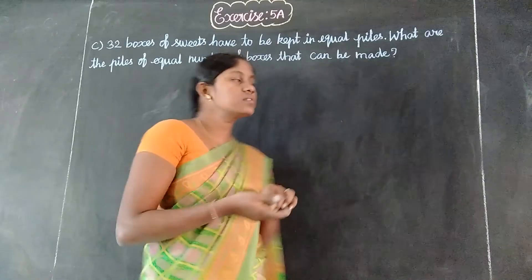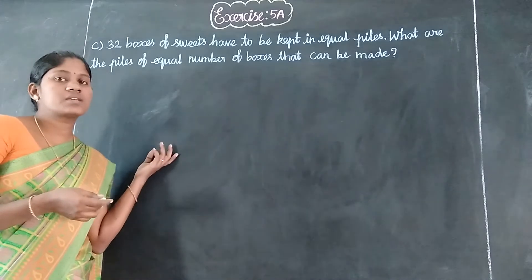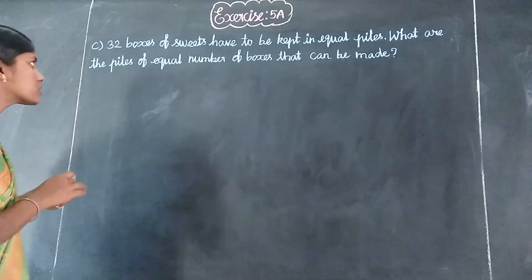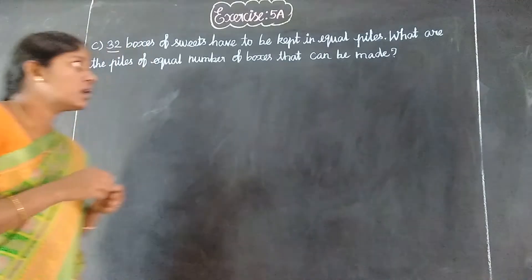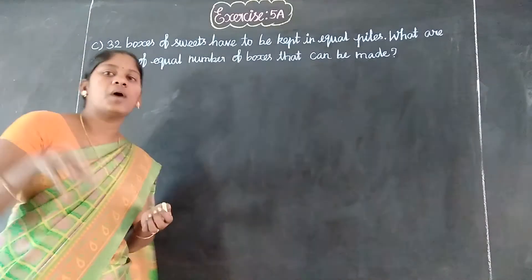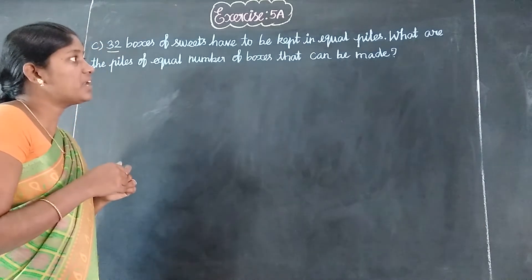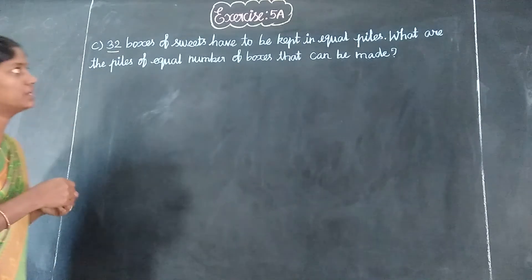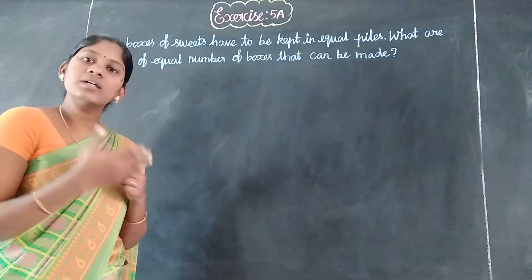Welcome students. This is exercise 5A, the last sum. 32 boxes of sweets have to be kept in equal piles. What are the equal number of boxes that can be made? The sweet boxes have to be arranged.